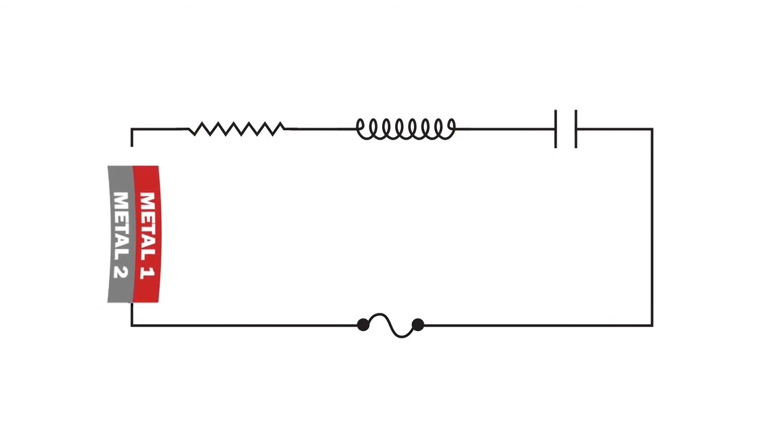As a result, the strip physically separates from the contact point, the circuit opens, and the current stops.